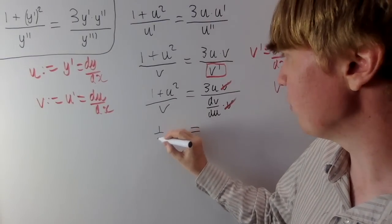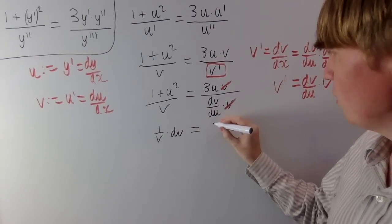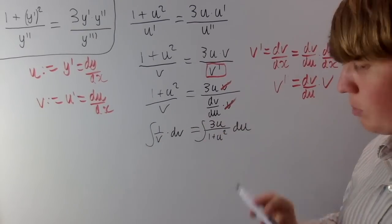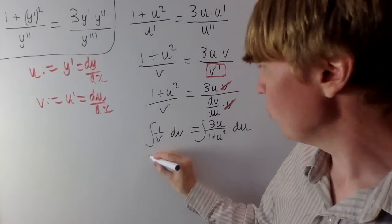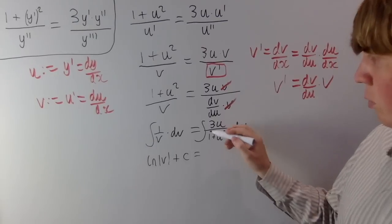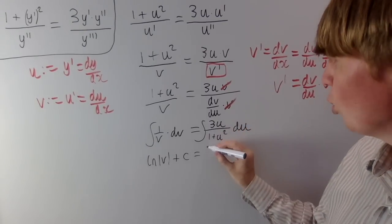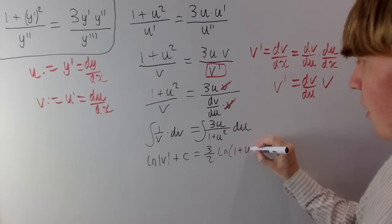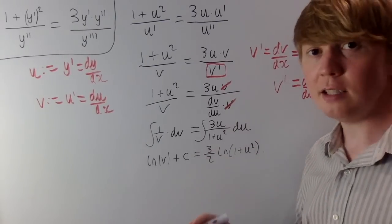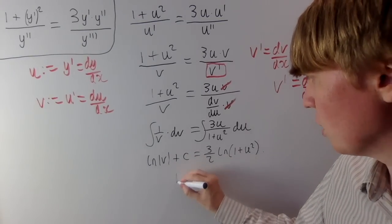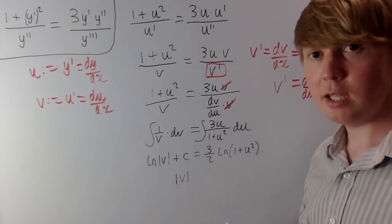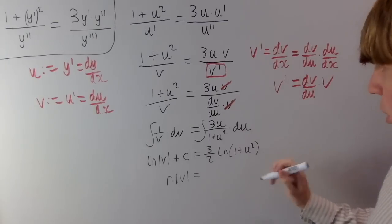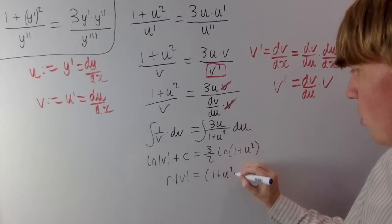Taking all v's to the left gives 1 over v dv, and on the right we get 3u over 1 plus u squared du. Integrating both sides: the left gives ln of the modulus of v plus a constant, and the right — a standard ln-type integral — gives 3 over 2 times ln of 1 plus u squared (no modulus needed since 1 plus u squared is always positive). Exponentiating both sides: the left gives the modulus of v, the constant becomes r, and the right gives 1 plus u squared to the power of 3 over 2. Since e to the power of c is greater than 0, we recover the constraint that r must be greater than 0.